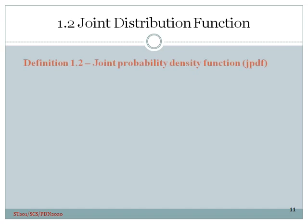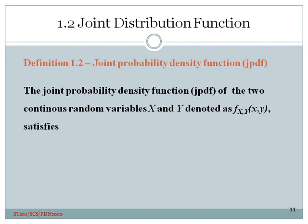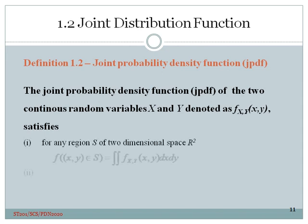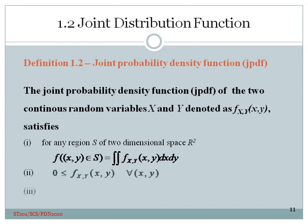Now let's look at the continuous situation. Definition 1.2 Joint Probability Density Function or JPDF. The JPDF of the two continuous random variables x and y denoted as f x y satisfies the following three conditions. For any region S of two-dimensional space R square, the JPDF is represented as the double integration over x and y. The second condition is that these probabilities should be greater than 0 for all x y points. And finally the total probability 1. If you integrate the function f x y over all x and then over all y, the answer should be 1.